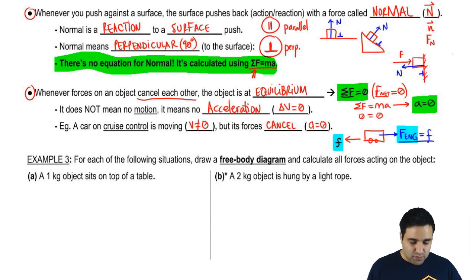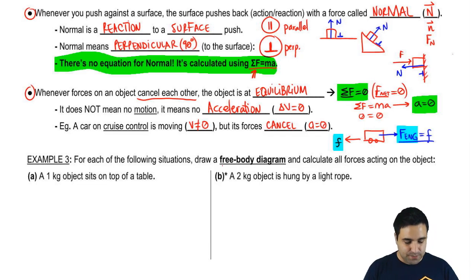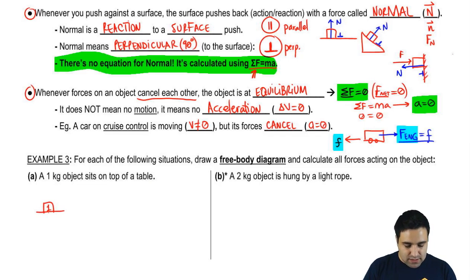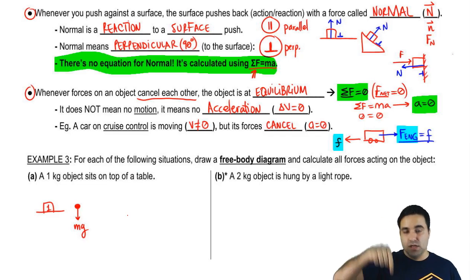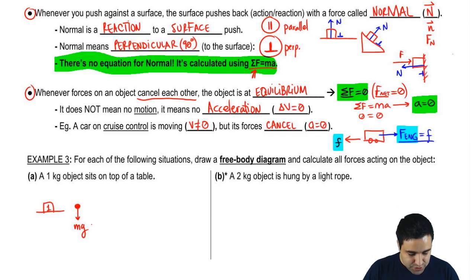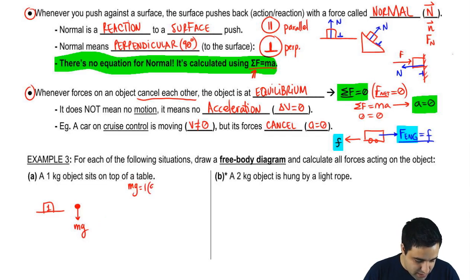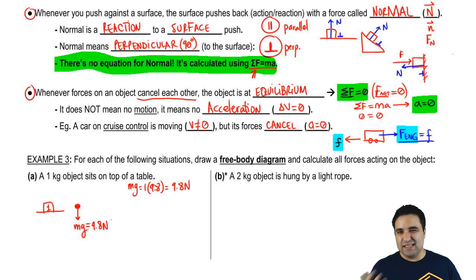I want to do two examples. For a 1-kilogram object sitting on top of a table, draw a free body diagram and calculate all forces. The free body diagram is just a dot with forces on it. The first force is mg — every object has mg pulling straight down. mg equals mass times gravity, 1 times 9.8, so it's 9.8 newtons. The arrow shows direction so we don't need to specify negative.